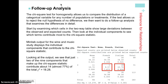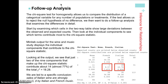Looking at the output, we see that just two of the nine components that make up the chi-square test statistic contribute about three-quarters of the total chi-square value. The ones that are boxed up are the ones that contributed most significantly. This means that the sales of Italian wine are strongly influenced by what music is being played.